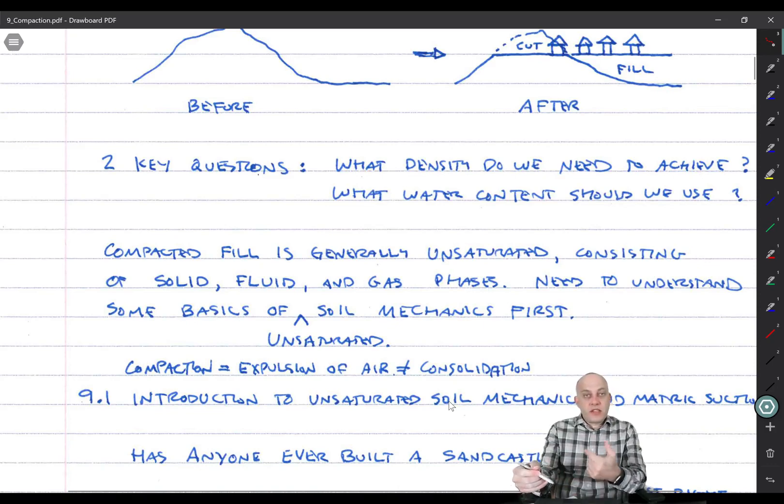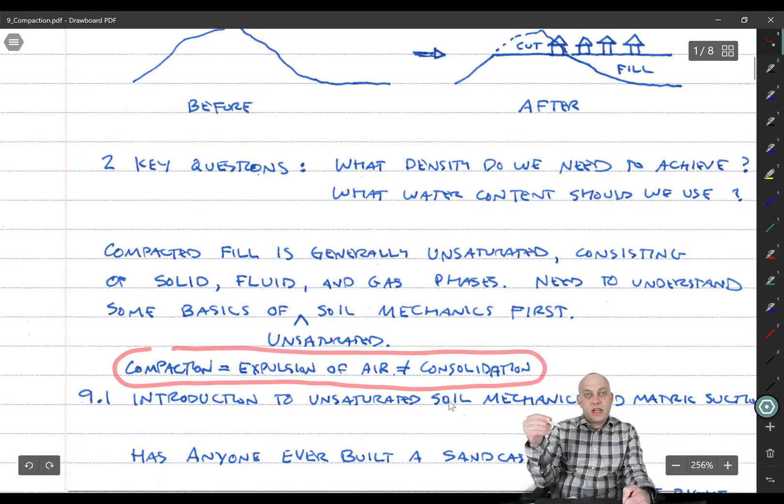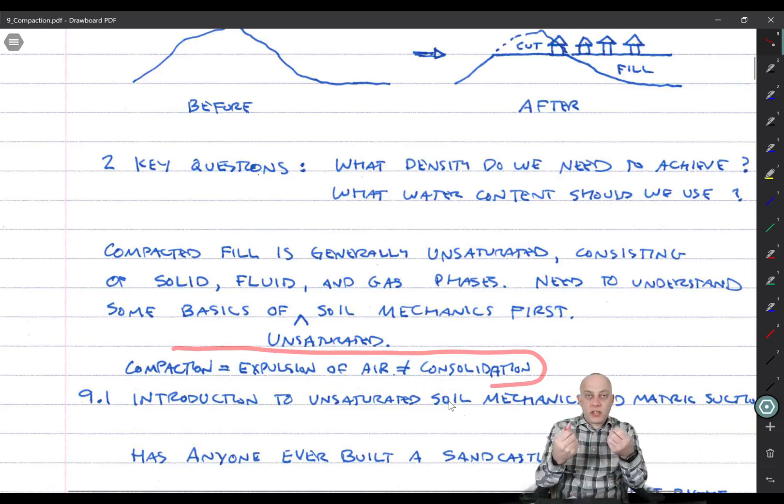And so the rest of this lecture will really focus on understanding the fundamentals of unsaturated soil mechanics. One thing that I'll point out: compaction is the act of expelling air from the soil. It's not the same as consolidation. The difference in those two words is that consolidation is expulsion of pore water from saturated soil. Compaction is expulsion of air from unsaturated soil. So we bring the particles closer together and all that air comes out.